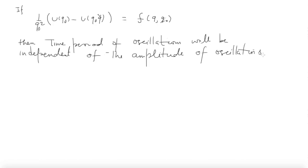For what potential will that happen? Clearly, if I choose U(Q) = constant × Q², then U(Q₀) is proportional to Q₀², and U(Q₀ Q̃) is also proportional to Q₀². This Q₀² will cancel with the 1/Q₀² factor, making the expression independent of Q₀. So for quadratic potentials, the time period of oscillations is independent of the amplitude and also of the energy.